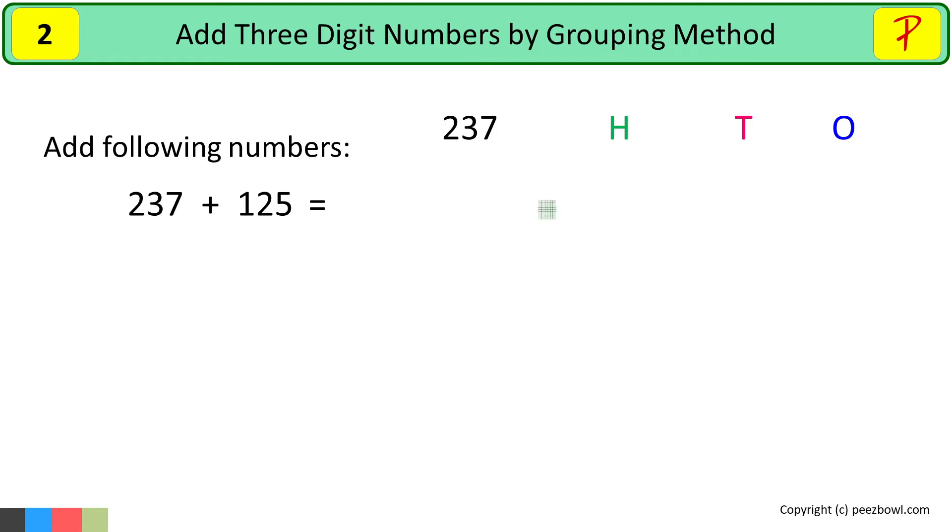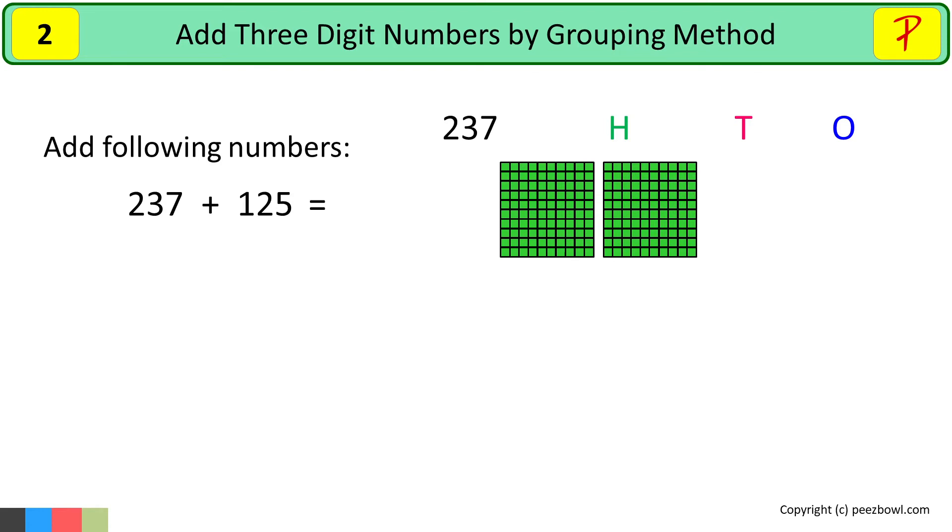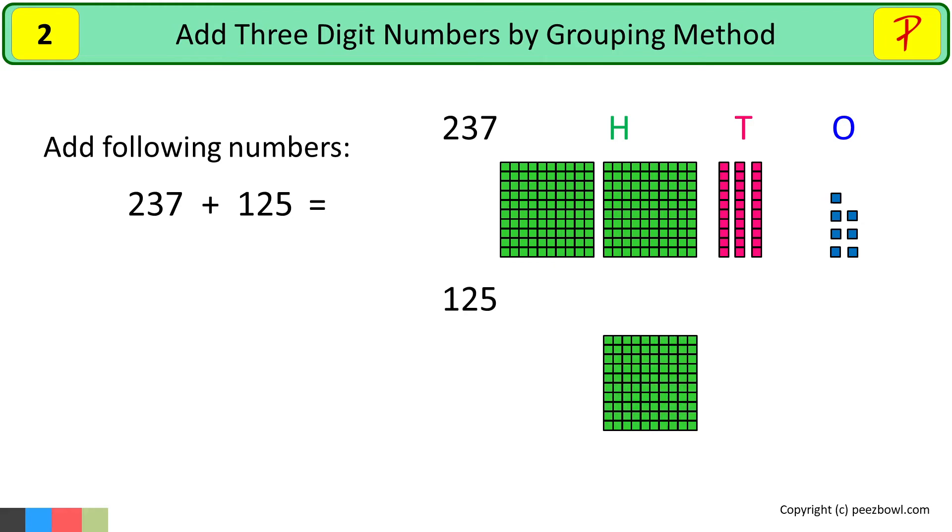We have two hundreds for the hundreds place, then three tens for the tens place and seven ones for the ones place. Similarly, we can show number 125 like this. There is 100 at the hundreds place, two tens at the tens place and five ones at the ones place.